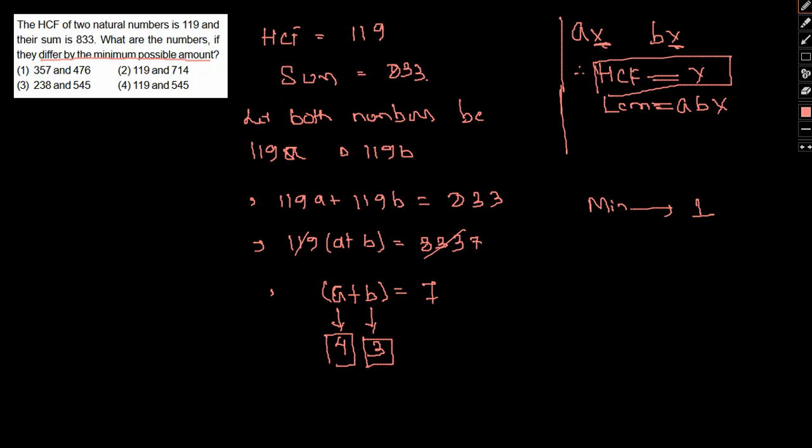Our numbers will therefore be 119 times 4, that would give us 476, and also 119 times 3, which is 357. So these two will be our answer: 476 and 357.